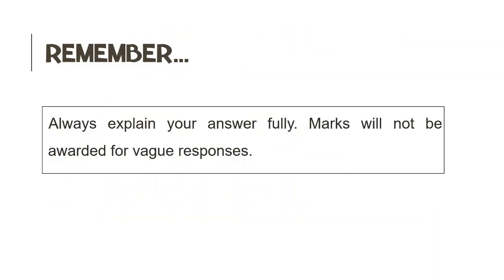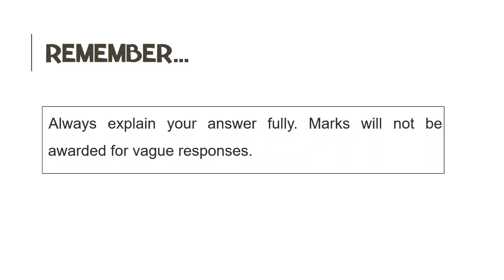Something you must always remember when answering a Level 3 Limitations question is that you always have to explain your answer fully. Marks will not be awarded for a vague response. How do you know when the question you are reading is a Level 3 Limitations question? We need to look out for the following words: 'Comment on the limitations' or 'Explain the limitations.' The word 'limitations' will always be in the question. When you see this word in the question, you are dealing with a Level 3 Limitations question and you need to look at the context in which the source was written, as well as the information within the source.